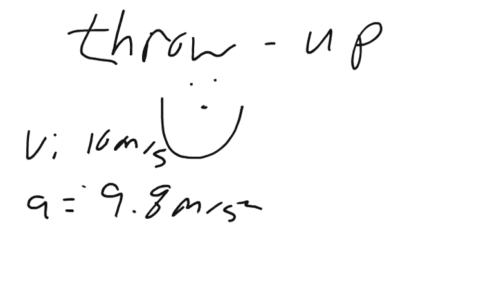And the last thing we know is when a ball is thrown up, at its highest point, it stops for just a moment. Its velocity becomes 0, and then it returns back down. So at its highest point, we know the VF, the final velocity, equals 0 meters per second.